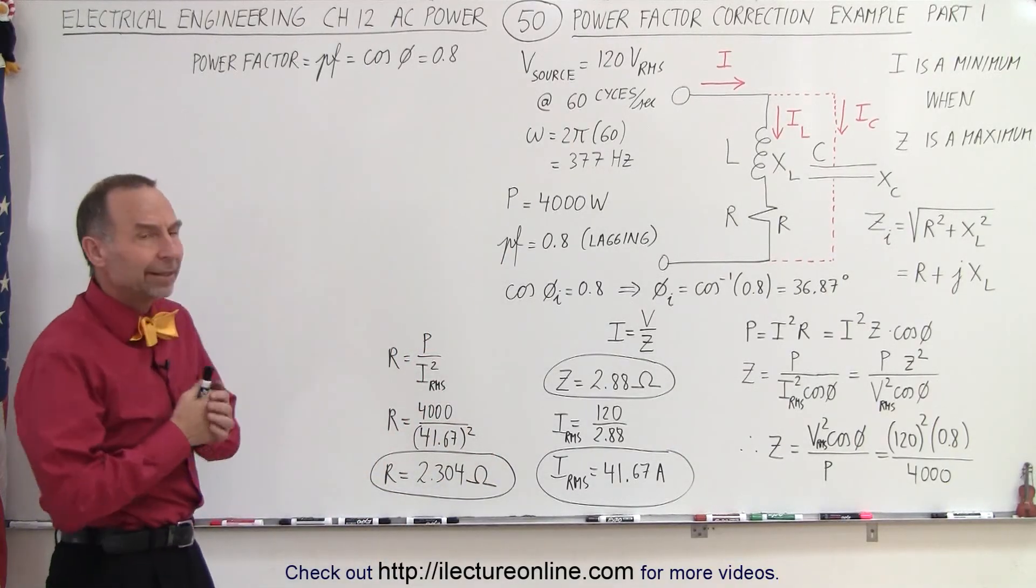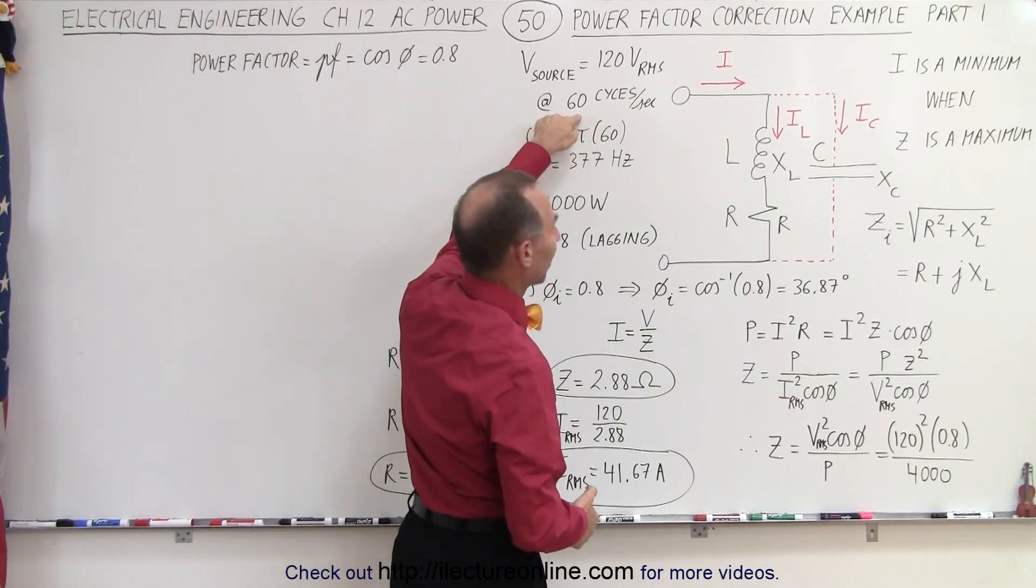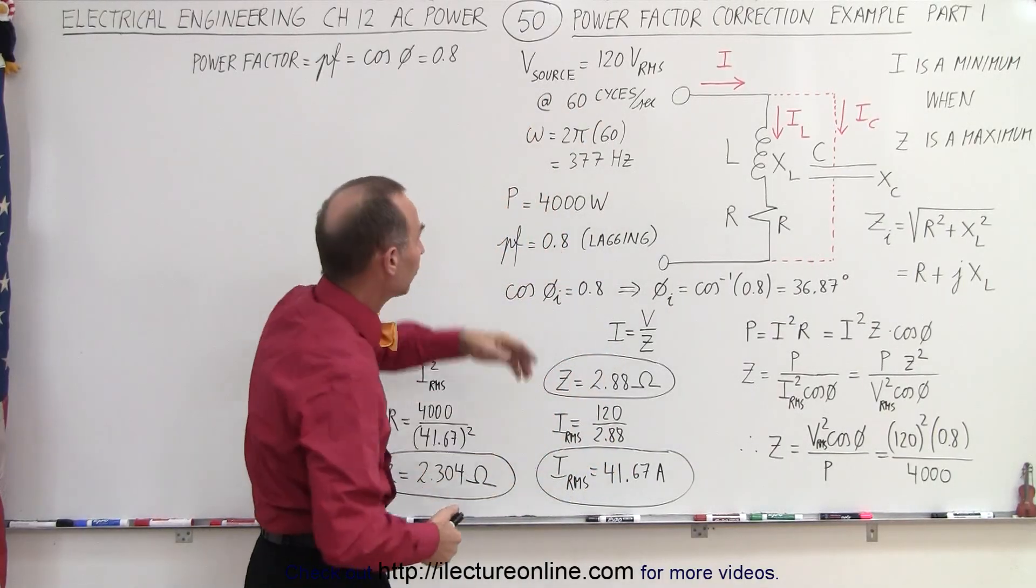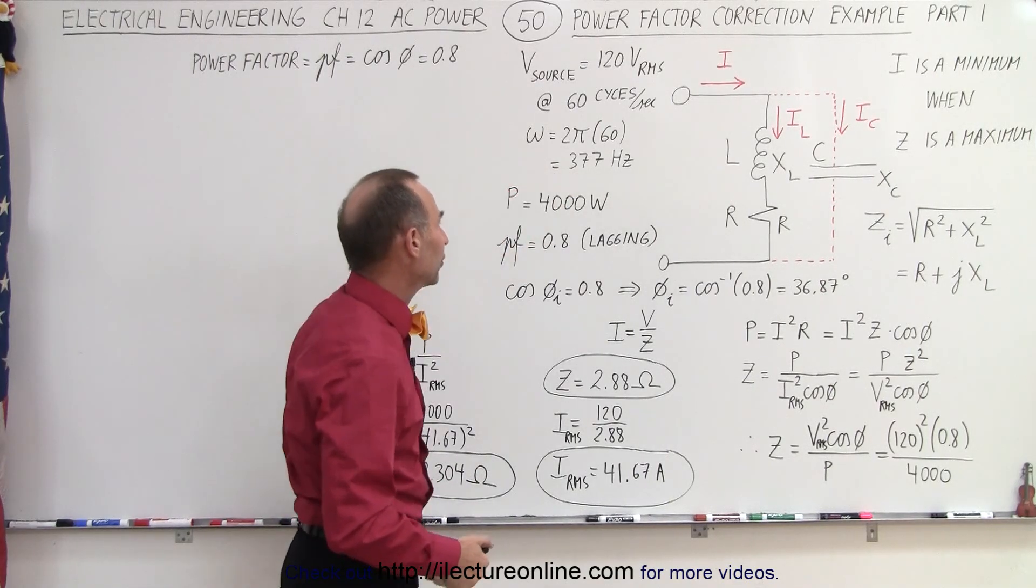So how do we do that? Well, let's say we have a source, a 120 volt RMS source at 60 cycles, that's typically household circuits, and therefore we can calculate the frequency of 377 hertz.